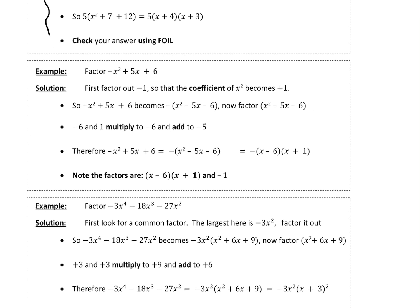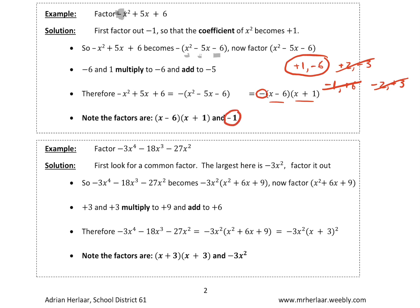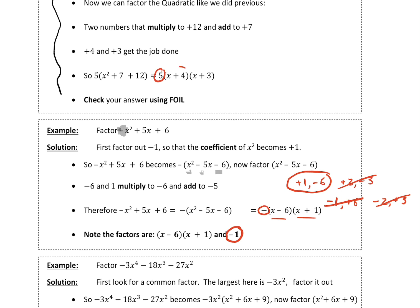Here's another example. There's no number in front of the x squared — well, there is: it's a negative, which means it's negative 1. So you have to factor that out and you'll just see the signs change. Now we're looking for two numbers that multiply to negative 6 and add to negative 5. Listing factors: negative 1 and negative 6, negative 2 and negative 3, positive 1 and negative 6, positive 2 and negative 3, negative 1 and positive 6, and negative 2 and positive 3. Which adds to negative 5? Positive 1 and negative 6. So it's x plus 1, x minus 6. But you have to keep the negative factored out — it is also a factor.